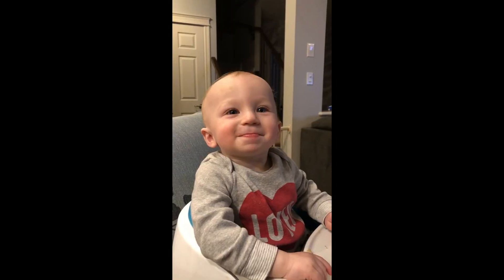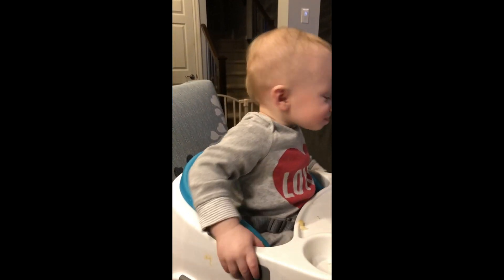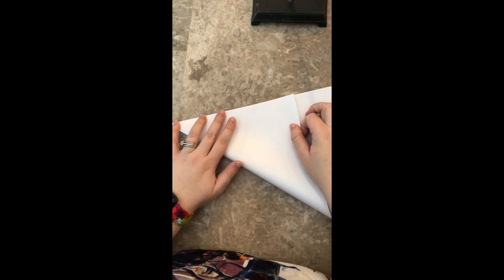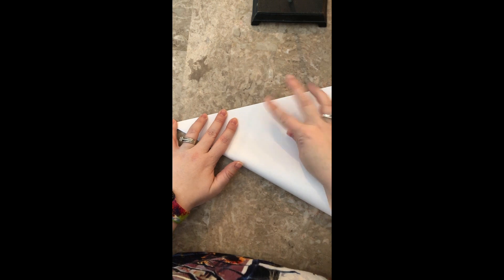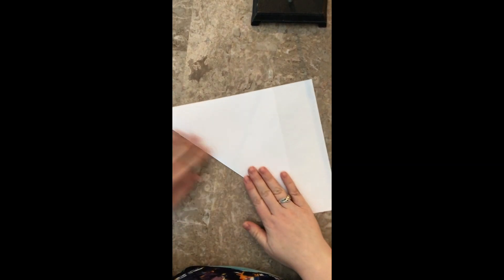Okay, we need to start with a square piece of paper. Is this a square piece of paper? So to make a square paper, we are going to fold one corner over to the side like so. Press down.